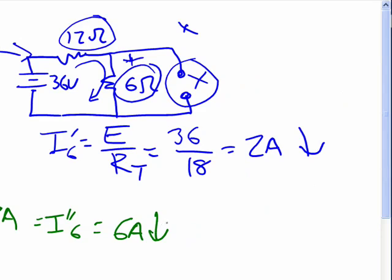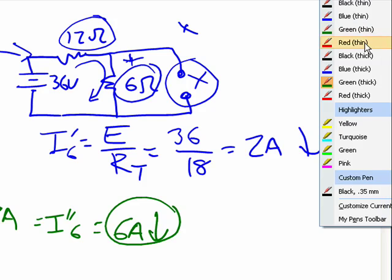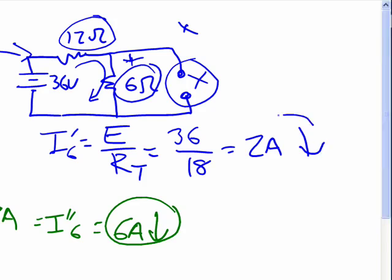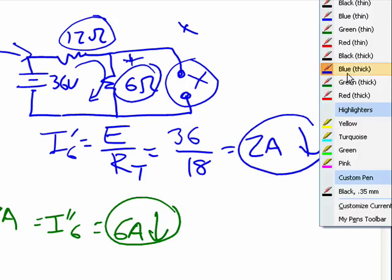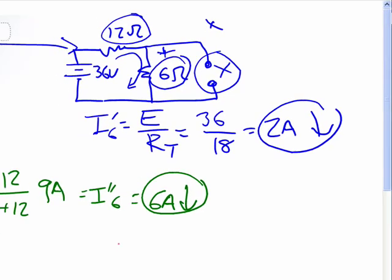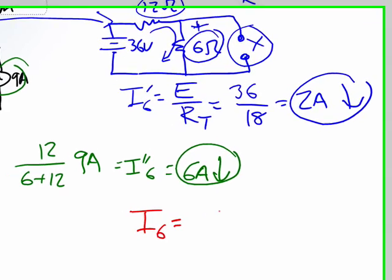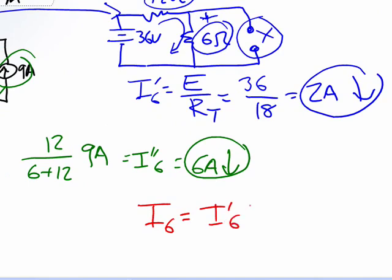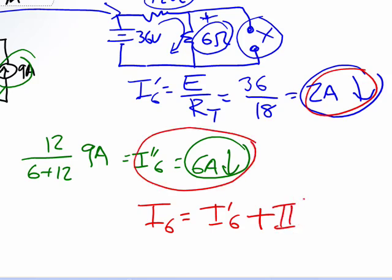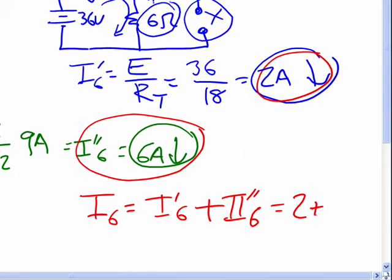So this is a situation where the 6-amps is going in the same direction as the 2-amps. So now we can summate these things here is I6 is equal to I single prime 6, which is our 2-amps, plus I double prime 6. 2 plus 6 is 8, which direction? It's going down.